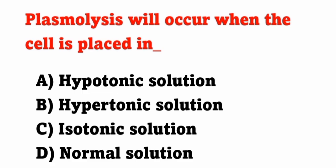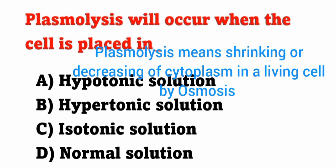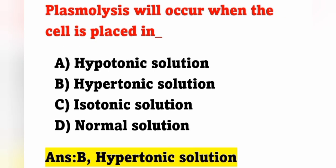Next question: plasmolysis will occur when the cell is placed in which solution? Option A: hypotonic. Option B: hypertonic. Option C: isotonic. Option D: normal solution. Plasmolysis means shrinkage or shrinking of cytoplasm in a living cell. It occurs by the process of osmosis — the movement of water from the cell into the extracellular fluid. It occurs in hypertonic solution. Option B is the correct answer.